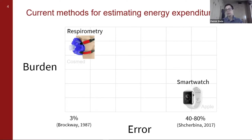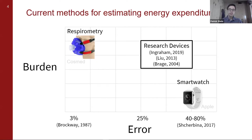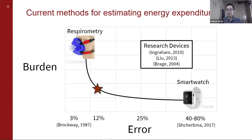Heart rate fluctuates with many different factors, such as caffeine, fatigue, and amount of sleep, so it's not a great indicator of how much you are exercising or the calories you're burning. Between these two solutions, there are a number of research devices with errors of approximately 25 to 40 percent, with varying cost and difficulty of wearing depending on sensors used. They frequently rely on heart rate, muscle activation, or a sensor fusion approach. Here we wanted to design a system that was both low burden and low error.